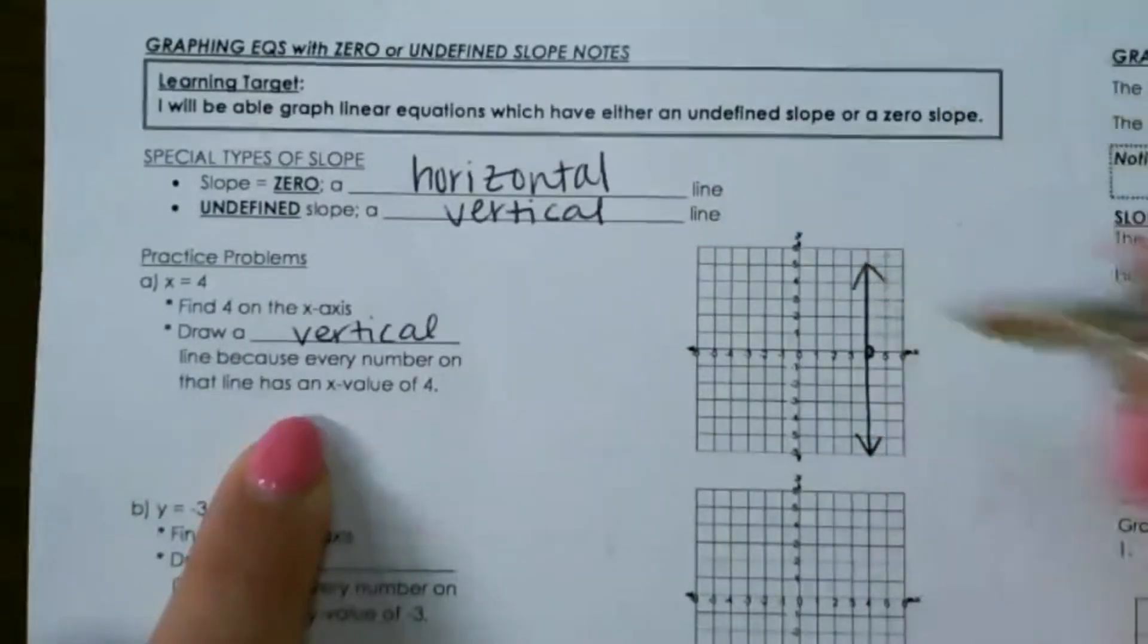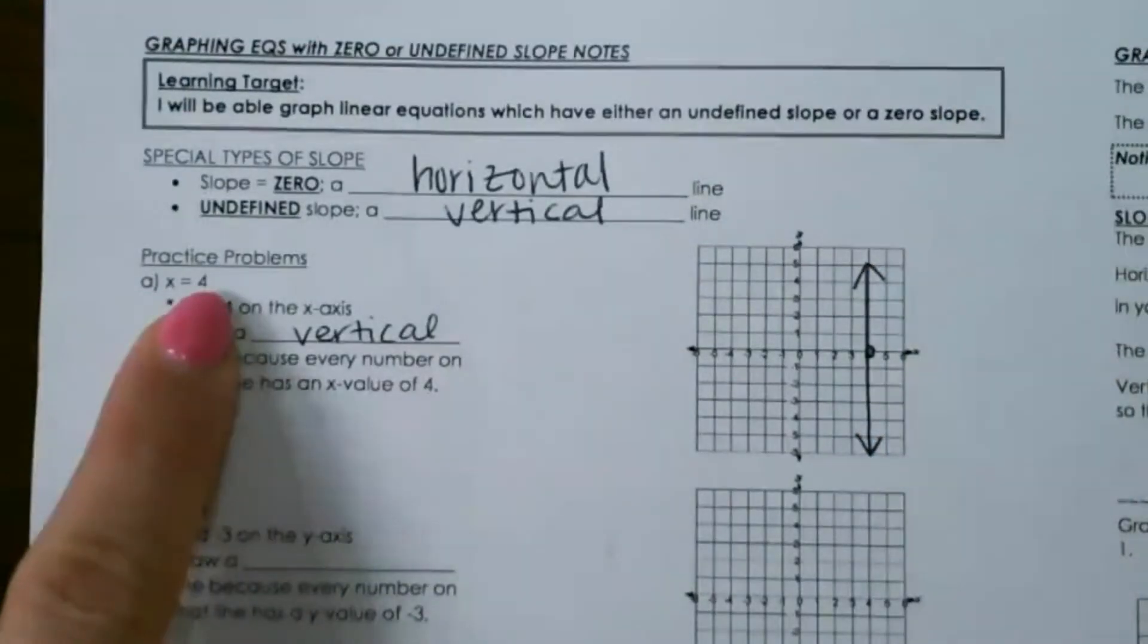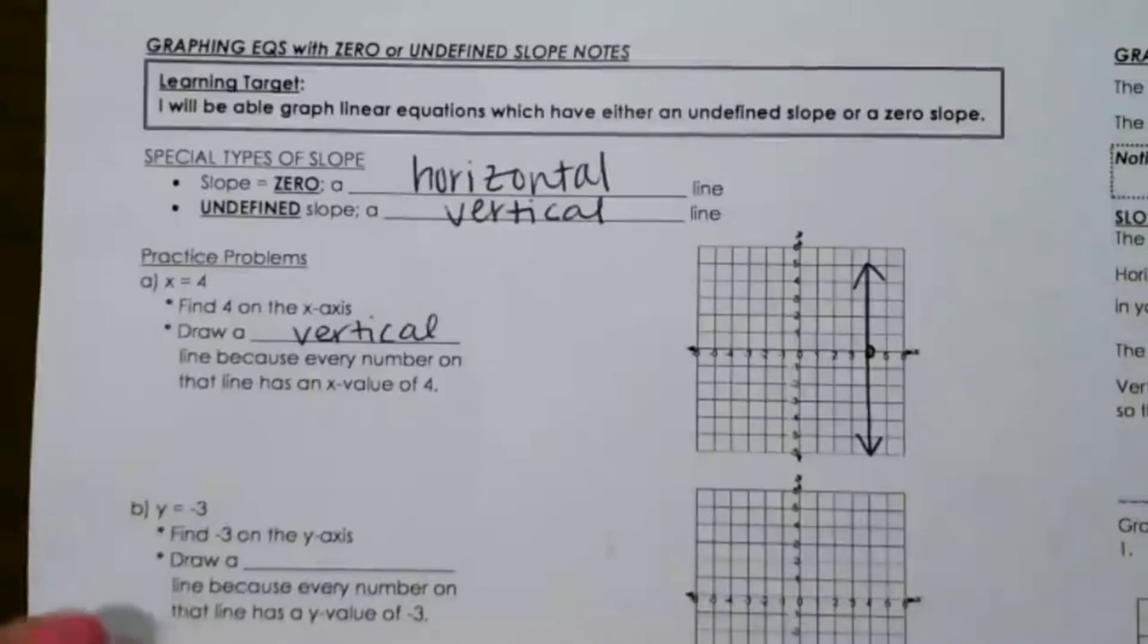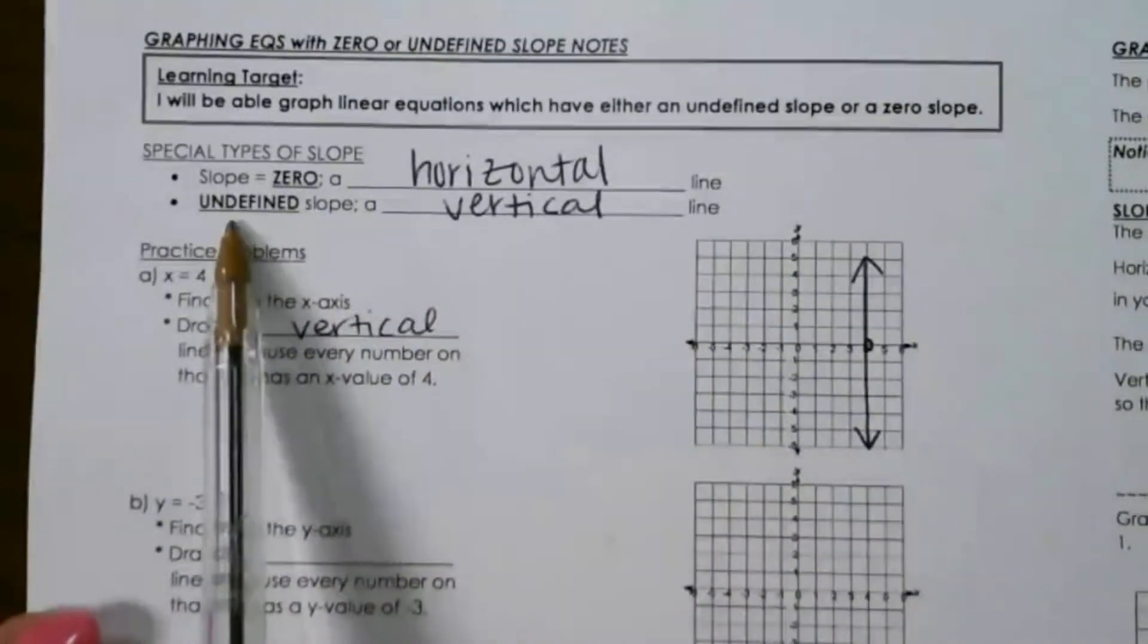So anytime you see an equation that just has x equals a number, that's going to be a vertical line because it has a slope of undefined.